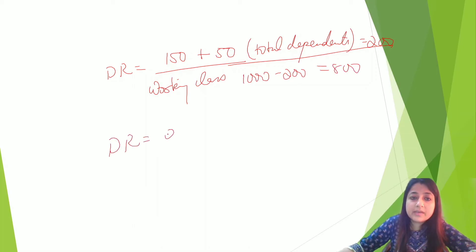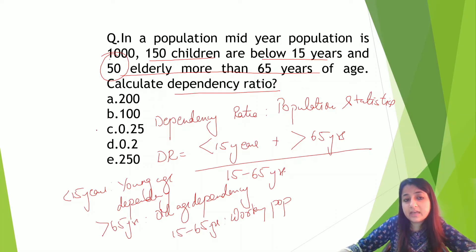Your dependency ratio will become 200 by 800. Since it's a ratio, the answer will come 0.25. If they are asked in percentage, you can multiply it with 100. So 0.25 is the answer.